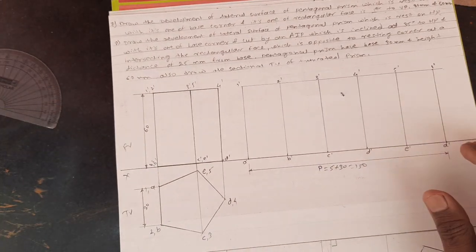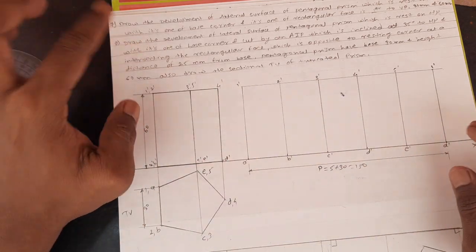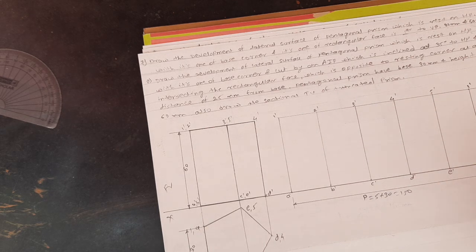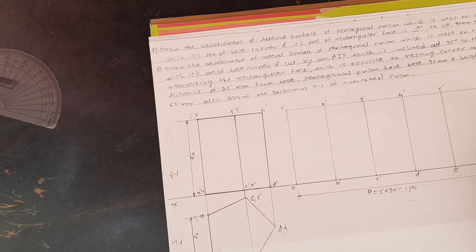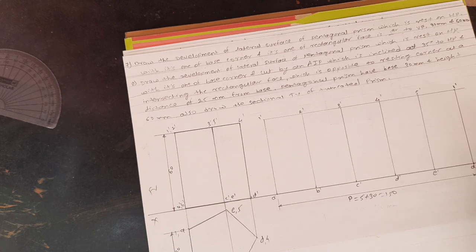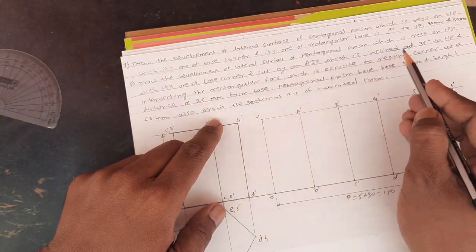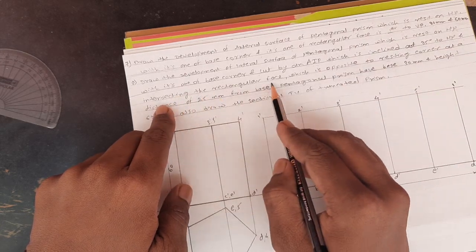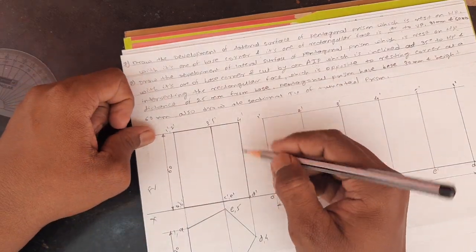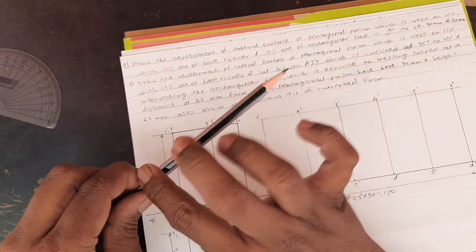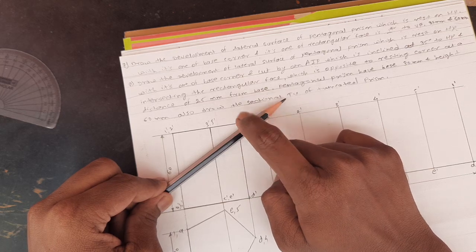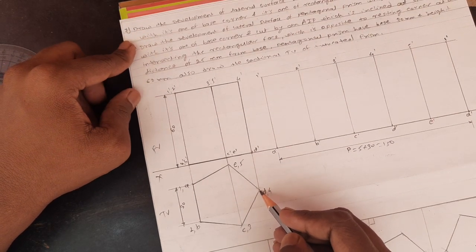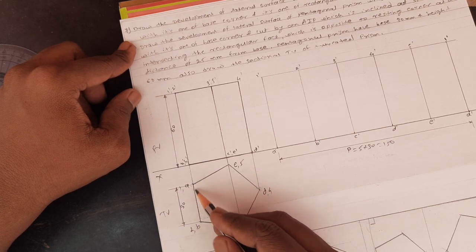This is the development of a pentagonal prism when it is not cut by any auxiliary inclined plane. In the next statement, the same pentagonal prism is cut by an auxiliary inclined plane. We need to check the angular position and vertical position of the AIP. The AIP is inclined at 35 degrees to HP and intersects the rectangular face opposite to the resting corner. The resting corner is at one end, and the opposite rectangular face is line 1A and 2B.